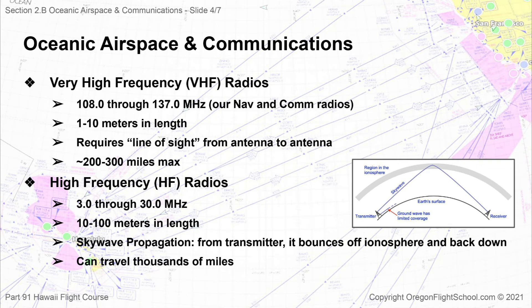The very high frequency VHF airband in the US falls between 108 and 137 MHz, and we use 118 through 132 for our normal two-way radio communications with ATC. These radio waves are anywhere from 1 to 10 meters long. This band of radio waves requires line of sight to exist between the transmitter and the receiver, either an airplane antenna or a ground-based antenna. The usable distance range of these VHF radios at altitude is, at best, a few hundred miles. At our most distant point from either Hawaii or the mainland, we will be about 1,000 nautical miles from both shorelines, meaning VHF communications with an air traffic controller simply won't work.